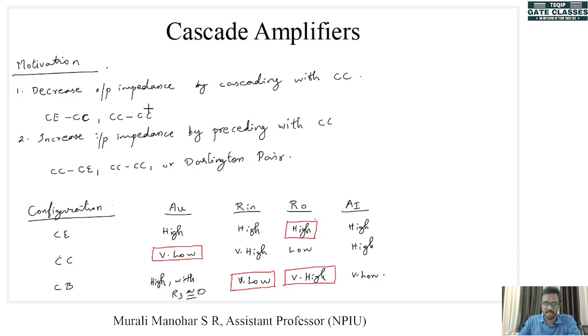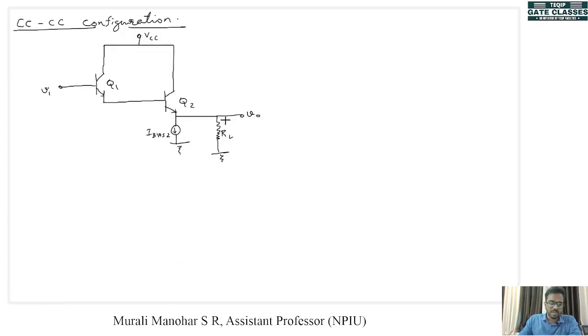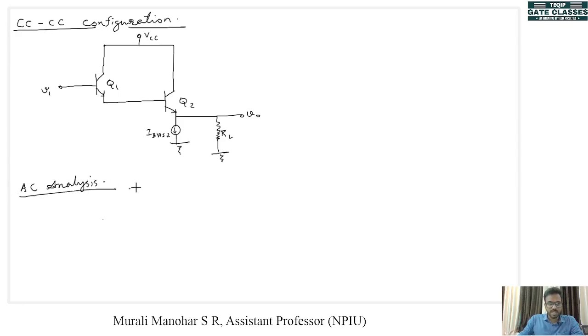For this configuration, our point of interest is output impedance as well as input impedance, because a CC-CC configuration must decrease the output impedance and increase the input impedance. We will now do the AC analysis of this circuit to find Rin and Rout.